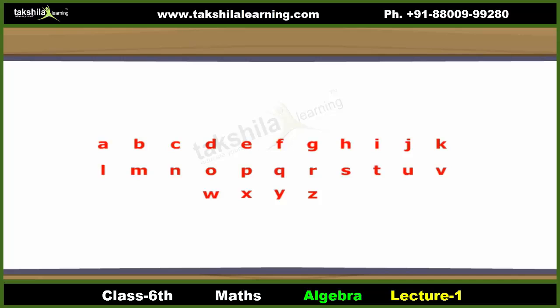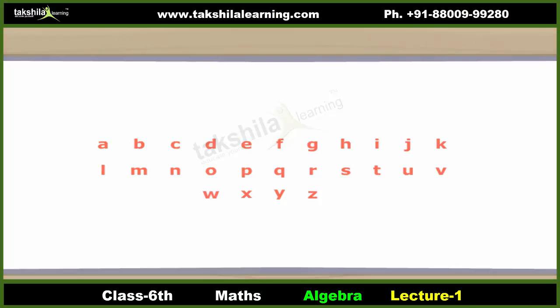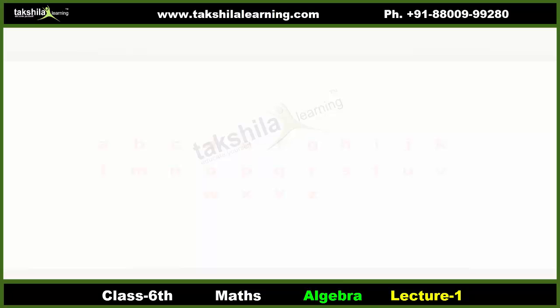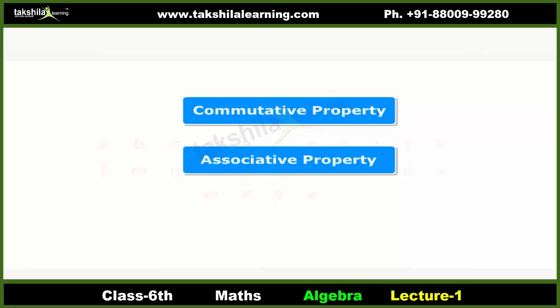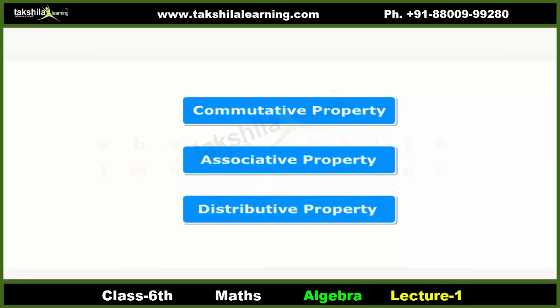Arithmetic properties and variables. Let us now express some commonly used arithmetic properties with the help of variables. These properties are: commutative property, associative property, and distributive property. Let's take a brief look at each.